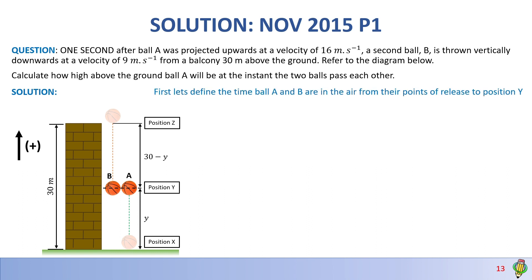What I want us to do first is define the time ball A is in the air from position X all the way to position Y — I'll call that ΔT. The time ball B travels from position Z to position Y is therefore ΔT minus 1, because ball B was in the air one second less than ball A.